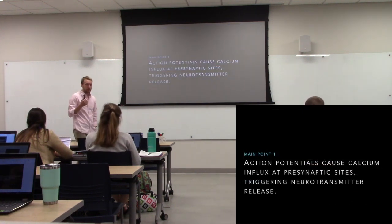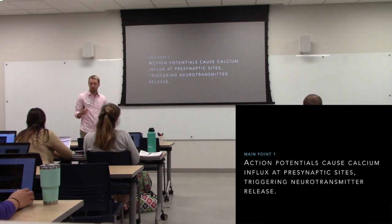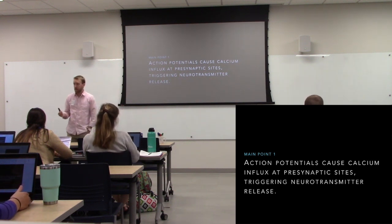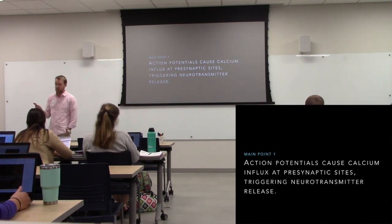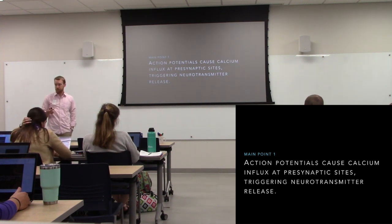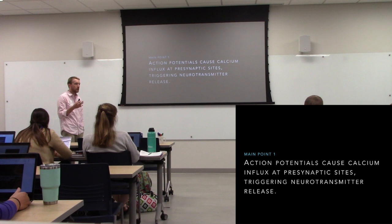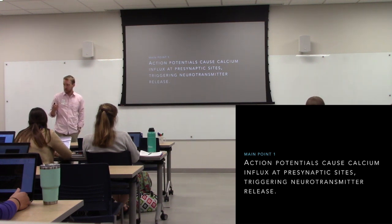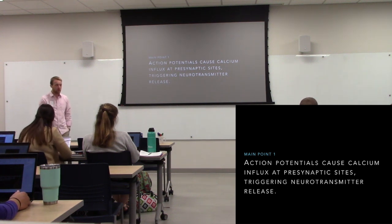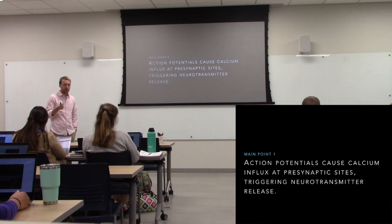When the action potential travels down the axon, it's going to activate voltage-gated sodium and potassium channels. At presynaptic sites, it's going to activate voltage-gated calcium channels — same idea, but different ion selectivity. We're going to let calcium flow in, and that calcium is going to cause some sort of change. Calcium is a secondary messenger, meaning it can act on intracellular proteins and modify their function, and some of those proteins are involved in neurotransmitter release.